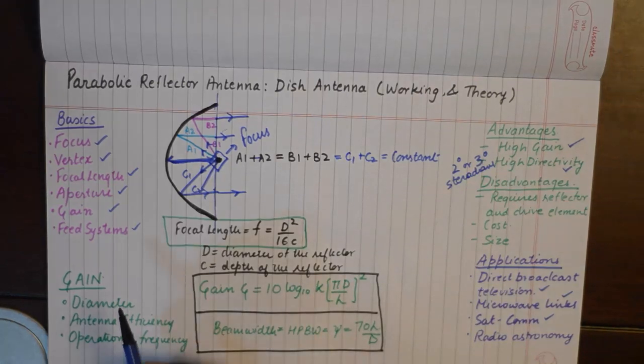The gain of a parabolic antenna depends on the diameter, antenna efficiency, and operational frequency, just like the gain of any other aperture antenna.